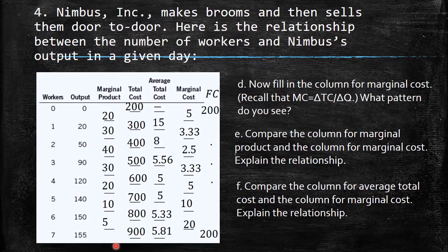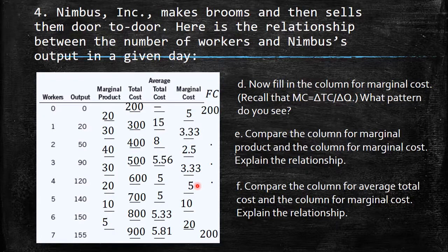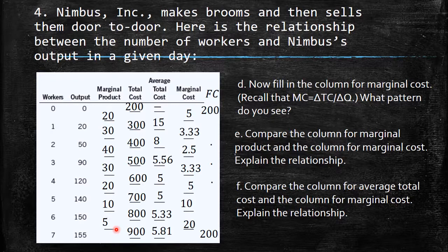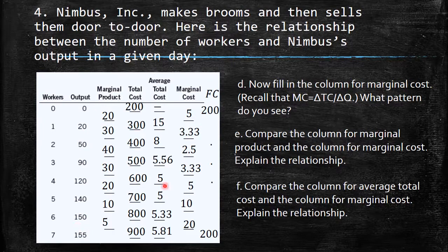To summarize the relationship between marginal product and marginal cost: marginal product is the slope of the production function, and marginal cost is the slope of the total cost curve. When marginal product is increasing, the production function gets steeper and the total cost curve gets flatter; when marginal product is decreasing, the total cost curve gets steeper.